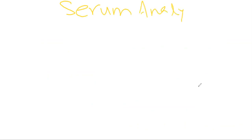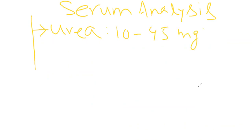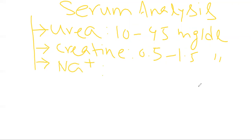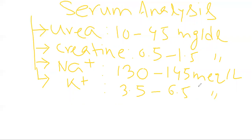In this serum analysis, in our day-to-day clinical setting we will mainly check few parameters. These commonly checked parameters are: number one, blood urea, and its normal range is 10 to 45 milligram per dl. Then is the serum creatinine; its normal range is 0.5 to 1.5 milligram per dl. Then serum sodium ion concentration, its normal range is almost 130 to 145 milliequivalent per litre. Then serum potassium ion, and its normal range is 3.5 to 6.5 milliequivalent per litre.